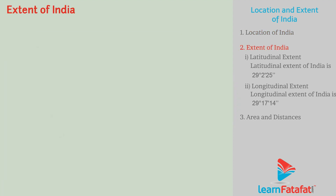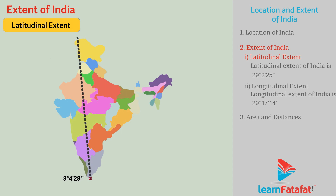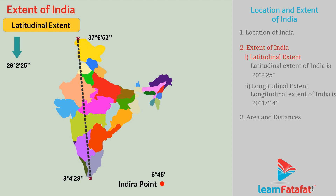Extent of India — Latitudinal extent. The latitudinal extent of the country is between 8 degrees 4 minutes 28 seconds north to 37 degrees 6 minutes 53 seconds north. Thus, the latitudinal extent of India is 29 degrees 2 minutes 25 seconds. The southernmost point of India is the Indira Point, located at 6 degrees 45 minutes north latitude in the Nicobar Islands.